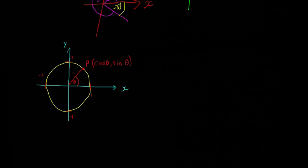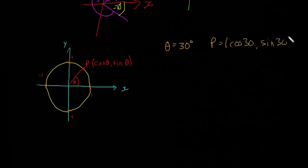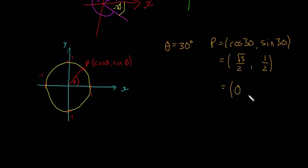For example, if theta looks to be about 30, so theta is equal to 30 degrees, then the point is going to be equal to cos 30, sine 30. Stick that into your calculator and you'll get that the point is root 3 over 2 and a half. In decimal places, that's equal to about 0.866 and 0.5. So if it's 30 degrees, that gives us the coordinates. You can do that for any angle at all — up to 360, or even if the angle is 700, it'll still give you the correct coordinate. So that's just a small thing you need to know about the unit circle.